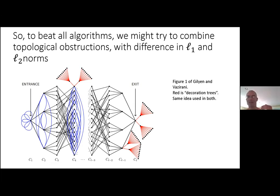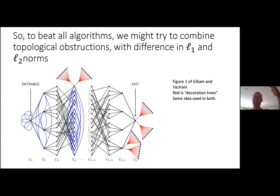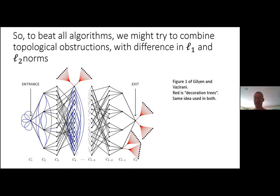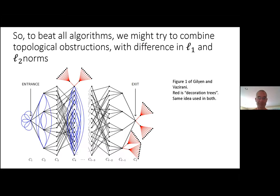The key idea is that these decoration trees — finite trees attached to each vertex of the main graph — look locally just like the rest of the graph, since all you learn in the oracle setting is the neighbors of a vertex. You can tune the tree parameters so they have negligible effect on the quantum ground state: the Hamiltonian restricted to the tree has higher energy than on the graph, simply because a finite tree ends somewhere and has a different spectral gap from something that loops back on itself.